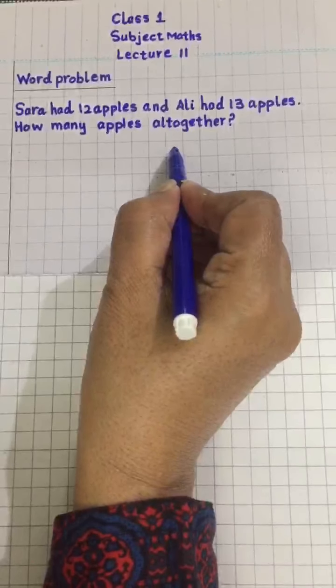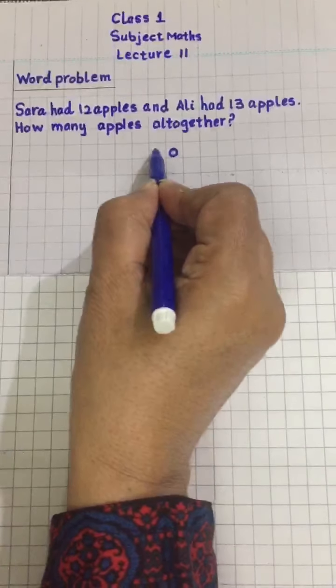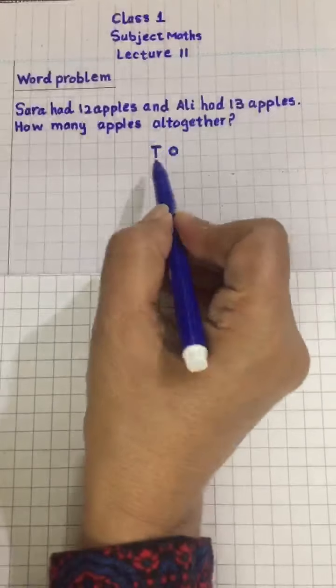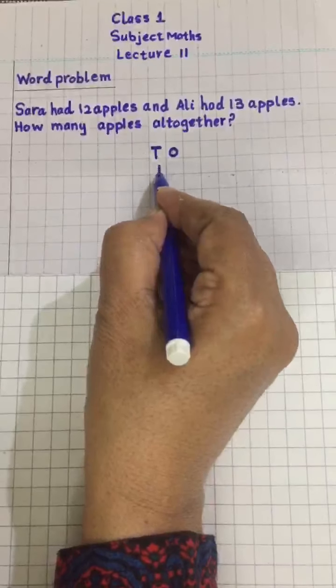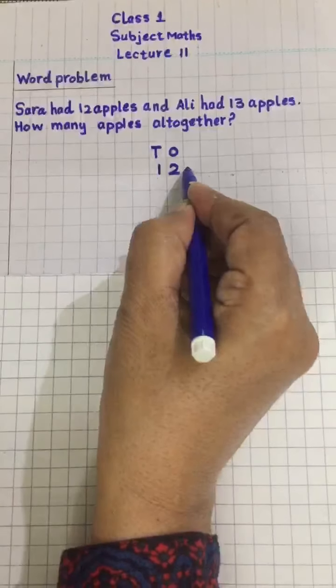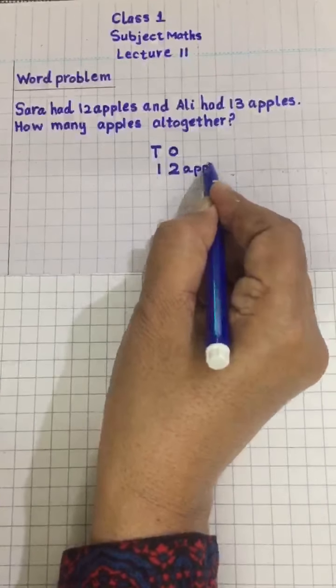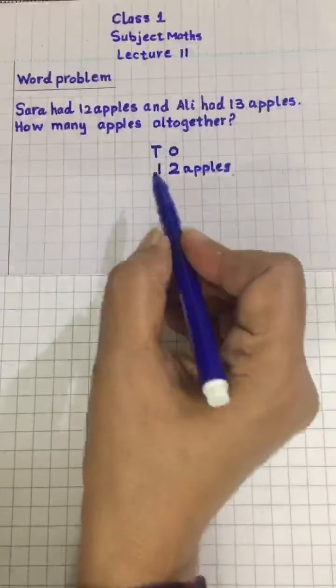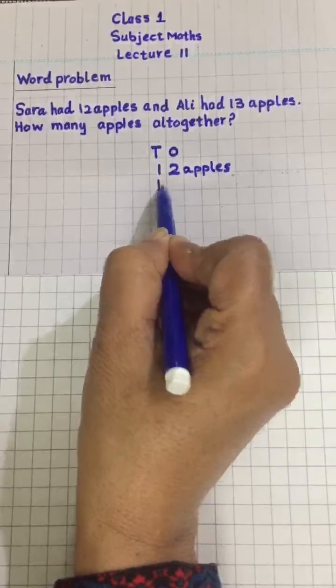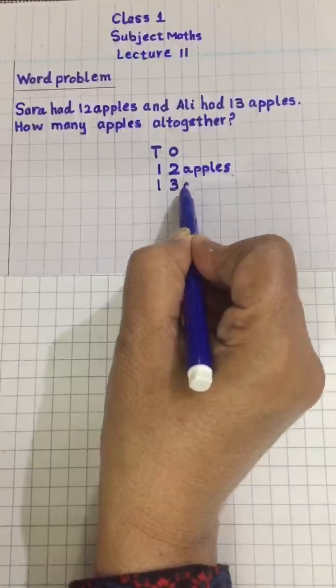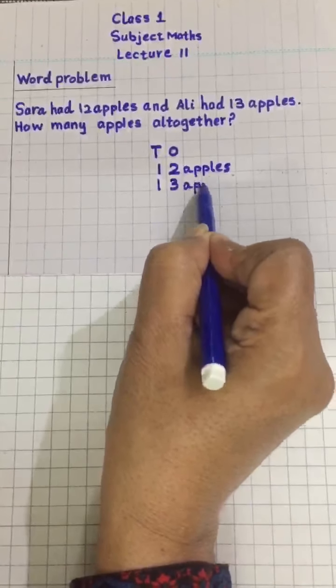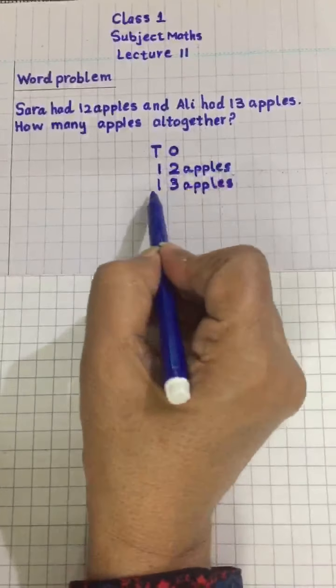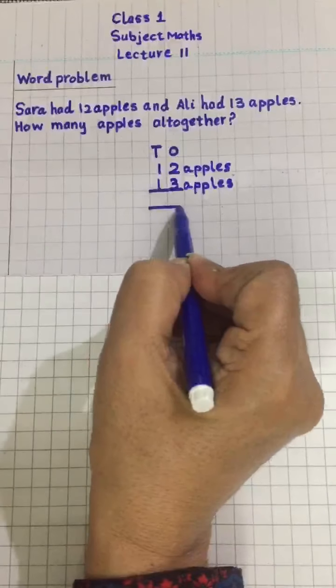First, place value. Sarah had 12 apples. Ali had 13 apples. All together, so I'll put a plus sign.